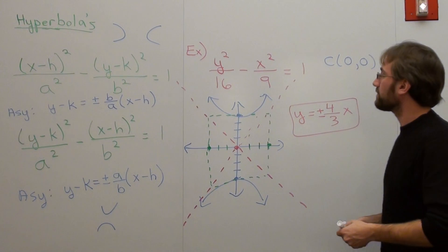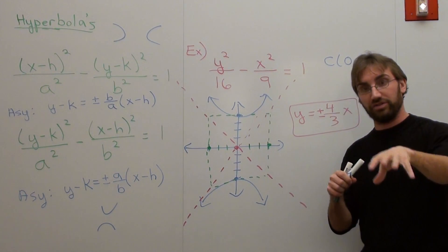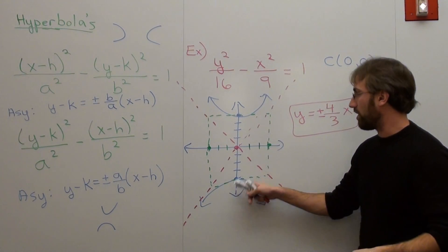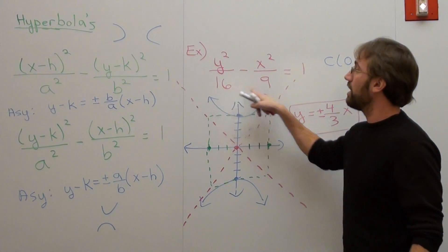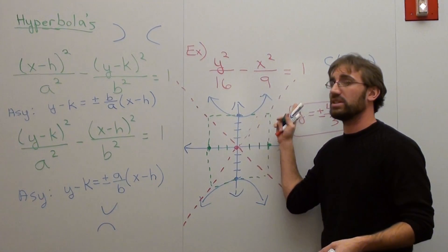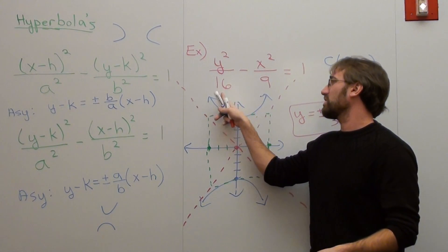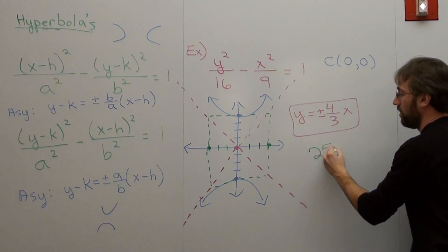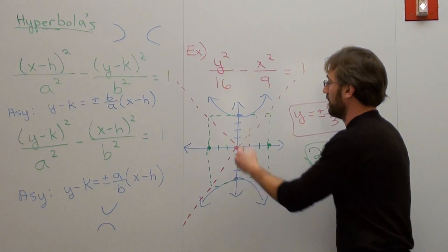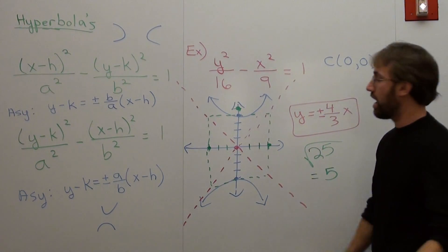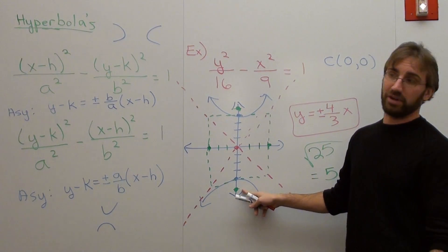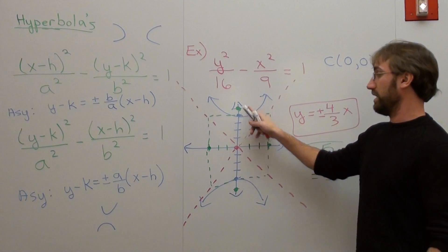The last thing to discuss is the foci. If you remember talking about the directrix and the focus of a parabola, the foci exist inside each little parabola, not outside. To find it, you just take a squared plus b squared equals c squared, then take the square root. So 16 plus 9 is 25, and the square root of 25 is 5 — and negative 5. So your foci for this hyperbola are at 5 and negative 5 on the y-axis.